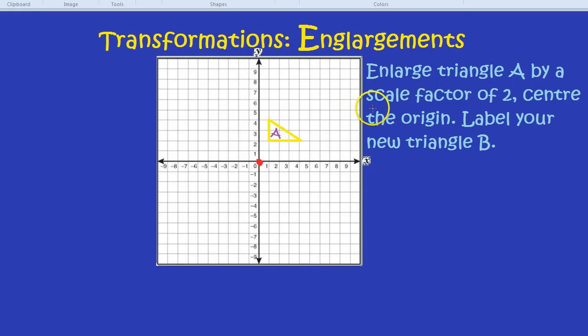But what on earth is this scale factor of 2? To cut a long story short, a scale factor of 2 means it's going to get twice as big. It scales up by a factor of 2. A scale factor of 3 would make things three times as big. A scale factor of a half would make something half as big.